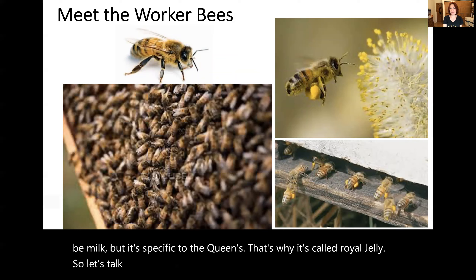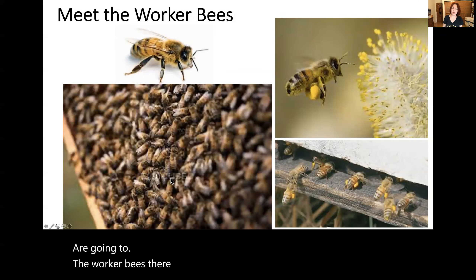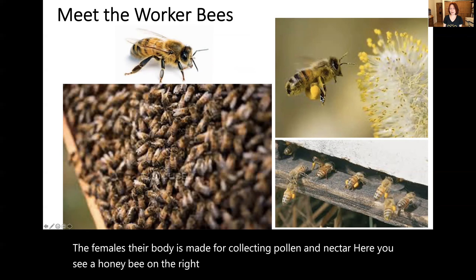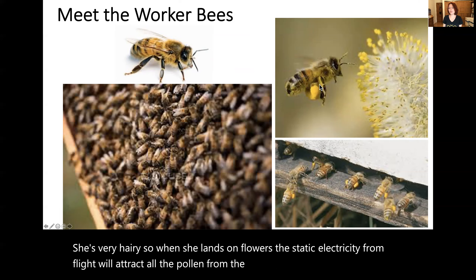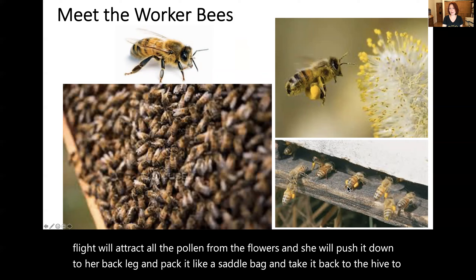Let's talk about the worker bees. Worker bees are the vast majority of the bees in the colony — they're the females. Their body is made for collecting pollen and nectar. Here you can see a honeybee on the right side with a little ball of pollen on each of her back legs. She's very hairy, so when she lands on flowers, the static electricity from flight will attract all the pollen from the flowers. She will push it down to her back leg and pack it like a saddlebag and take it back to the hive to feed the babies and themselves.